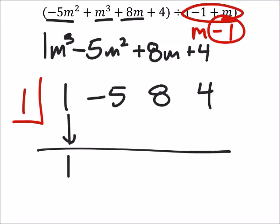Let's drop the 1. And 1 times 1 is 1. -5 plus 1 would be -4. Then we got -4 times 1, which is -4.